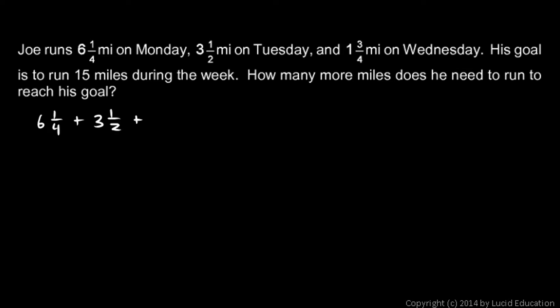Now let's rewrite this problem so it's a little bit easier. First we'll convert all of these to improper fractions. The six and a fourth: I do six times four is 24, plus the one is 25, so I get 25 fourths.